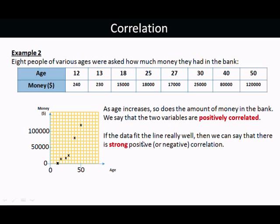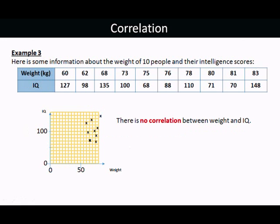In fact, if the data fit a trend line really well, so if they form a really close straight line without much variation, you can say that there's strong correlation. Strong positive or negative correlation, depending on which way it's going.